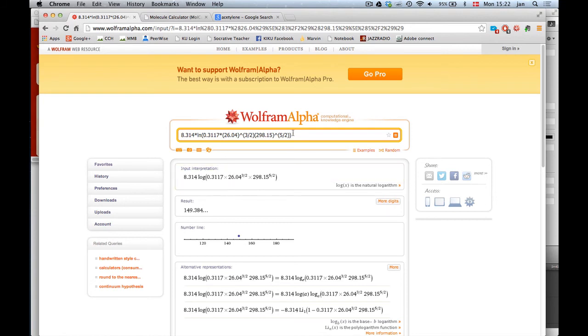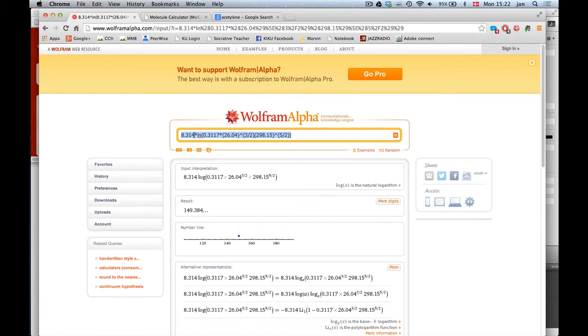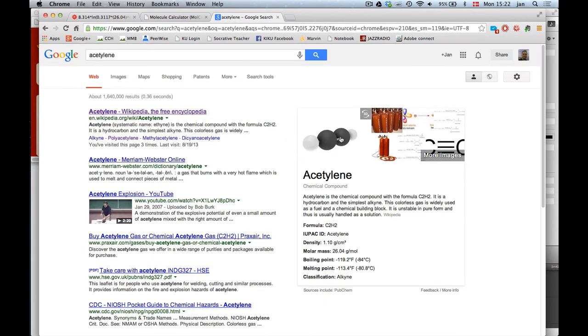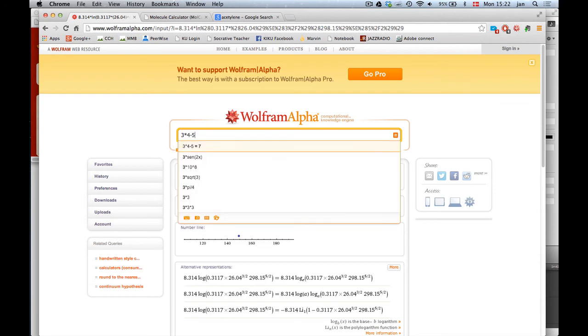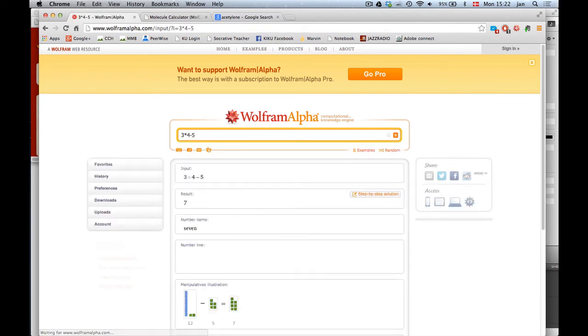Now how many vibrations contribute to the vibrational entropy? If we look at it, we can see that acetylene is a linear molecule. So 3 times the number of atoms in acetylene—so that is 1, 2, 3, 4—and then we subtract 5 because it's a linear molecule. And the answer is 7.